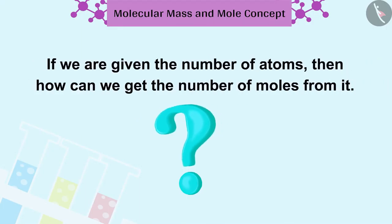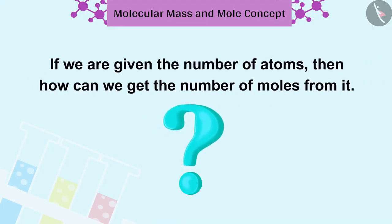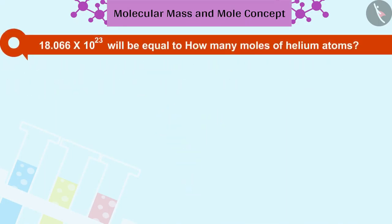Now, let's see if we are given the number of atoms, then how can we get the number of moles from it? 18.066 into 10 raised to 23 will be equal to how many moles of helium atoms?